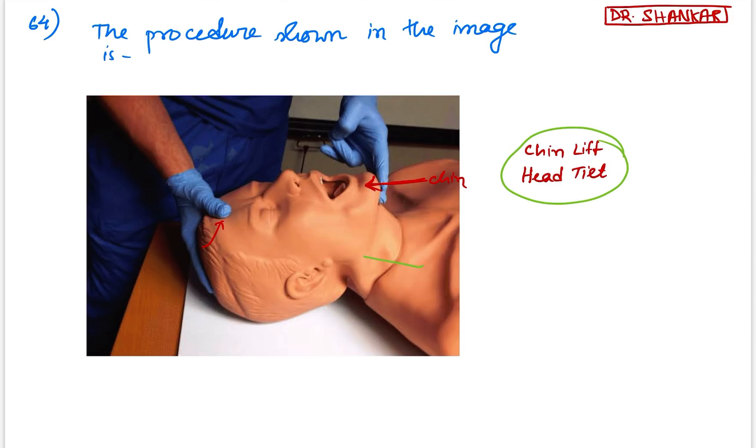Sometimes it is also associated with jaw thrust that is called triple maneuver: chin lift, head tilt and jaw thrust. For jaw thrust, the pressure is applied here in the angular mandibular region to make the airway patent. This is jaw thrust, but this is chin lift. So the procedure shown here is chin lift, head tilt.